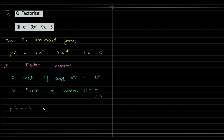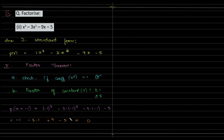So we have: (−1)³ minus 3×(−1)² minus 9×(−1) minus 5, which gives minus 1 minus 3 plus 9 minus 5, and all of this equals 0. Our assumption was correct — we found the factor.